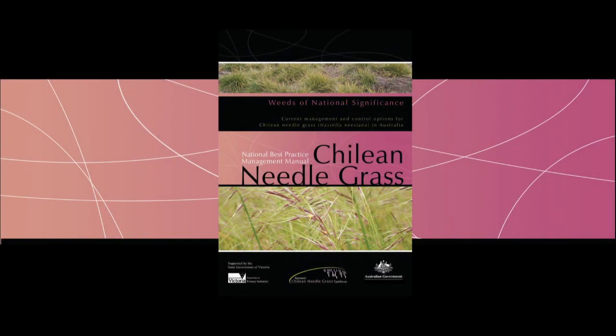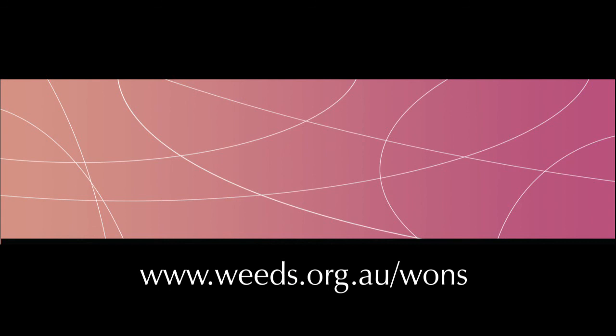We hope that this presentation will help you to identify Chilean needle grass and other Nassella weeds. However, if you are still unsure, consult your local agronomist, grass specialist, or the National Chilean needle grass coordinator before planning any control works or other activities. For more detailed information on CNG identification and other aspects of control, refer to the Chilean needle grass national best practice management manual or contact the coordinator from the Weeds Australia website.